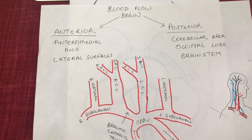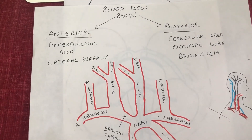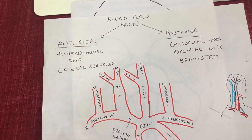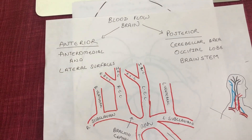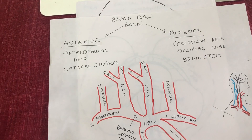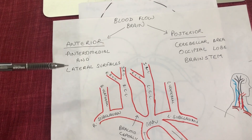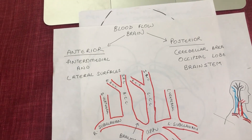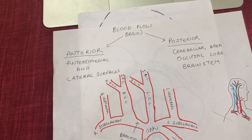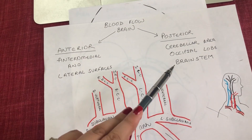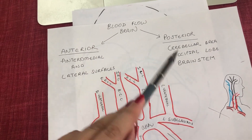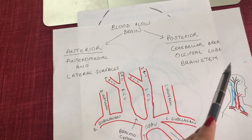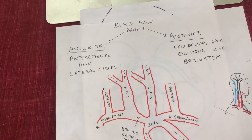Cerebral circulation is divided into two main parts: the anterior and the posterior. The anterior part is responsible for supplying blood to the anterior, medial, and lateral surfaces — like the frontal lobe, the temporal lobe, the parietal lobe. And the posterior circulation is responsible for supplying blood to the cerebellum, the occipital lobe, and the brainstem.